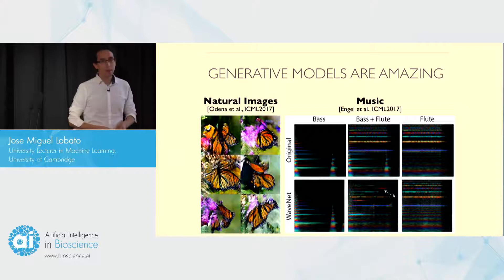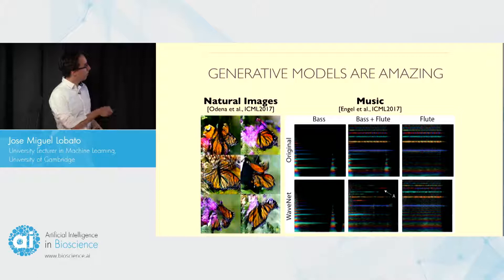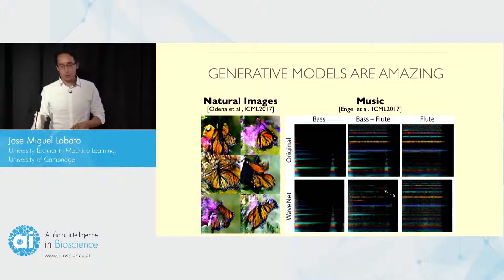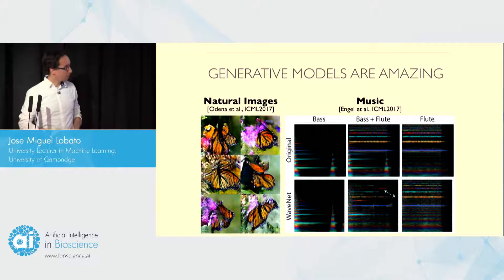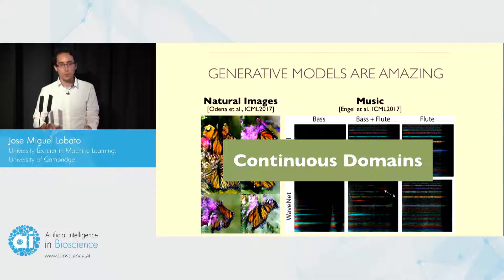We have seen a lot of new generative models that can actually learn from real-world data and then can be used to generate synthetic but realistic data. For example, images — these models can generate very realistic images — and they can also be fitted to sounds and generate very realistic sounds from musical instruments. These methods have been very successful, and they have one characteristic: they are applied to data in continuous domains.